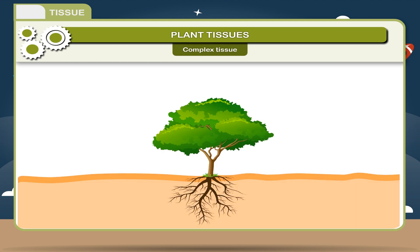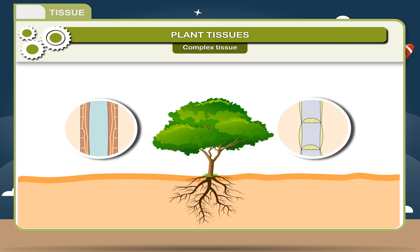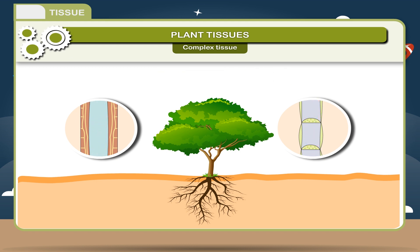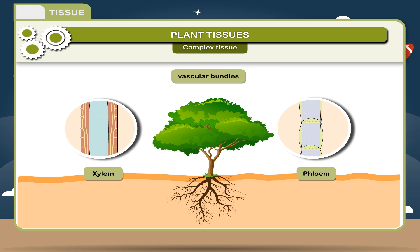Complex tissue. A complex tissue is made up of more than one type of cells that work together as a unit. It helps in the transportation of water, minerals, and food to the different parts of a plant body. They are of two types: xylem and phloem, collectively called vascular bundles.